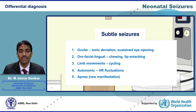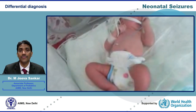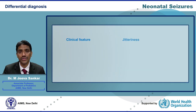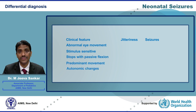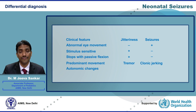Differentiating seizures from other abnormal movements like jitteriness is often a difficult task. Unlike seizures, jitteriness is not associated with any abnormal ocular movements like eye fixation or tonic eye deviation. The movements in jitteriness are typically stimulus sensitive and often stop with passive restraint. The predominant movement in jitteriness is tremor, which is more rapid than typical clonic jerks. Finally, there are no associated autonomic disturbances in jitteriness.